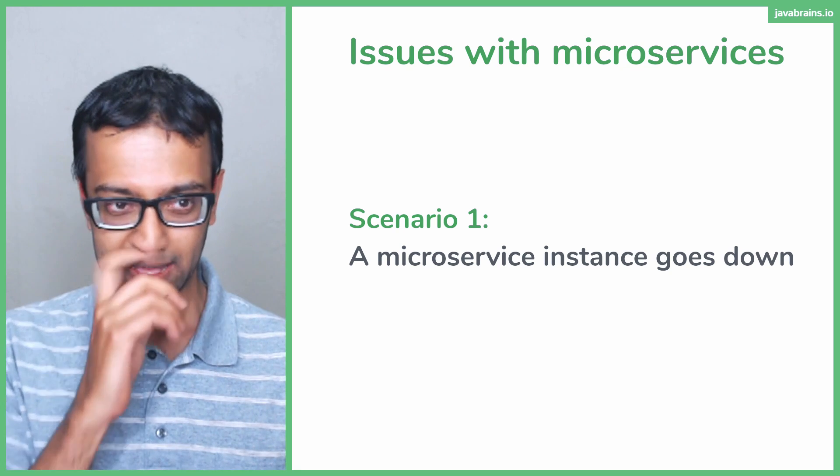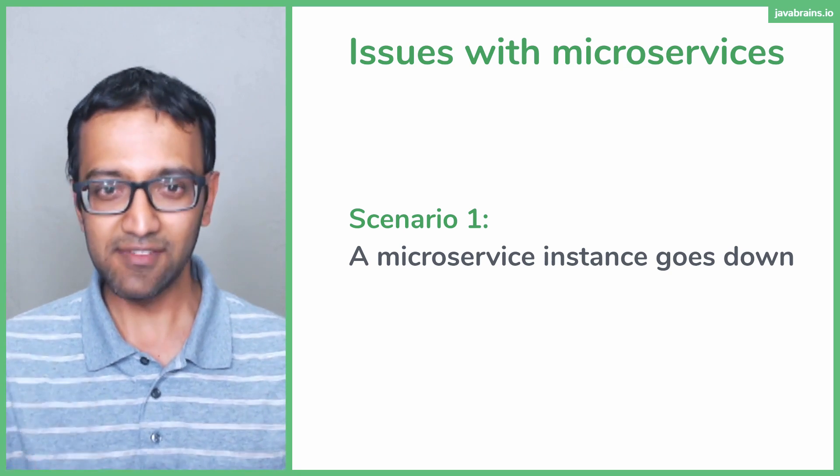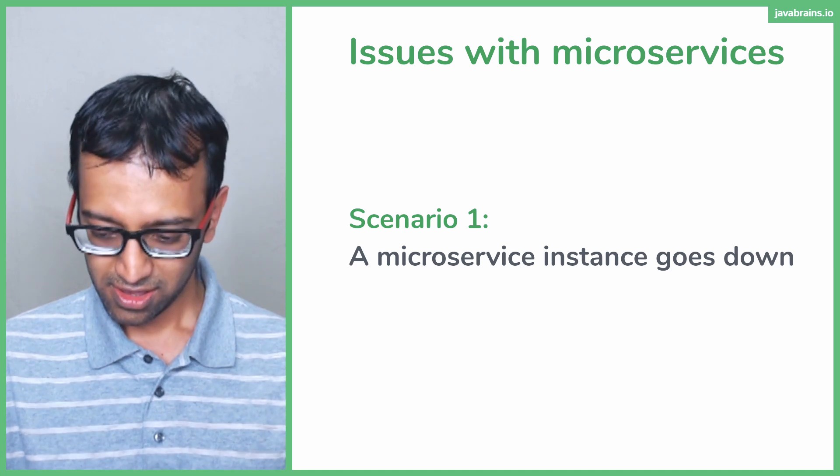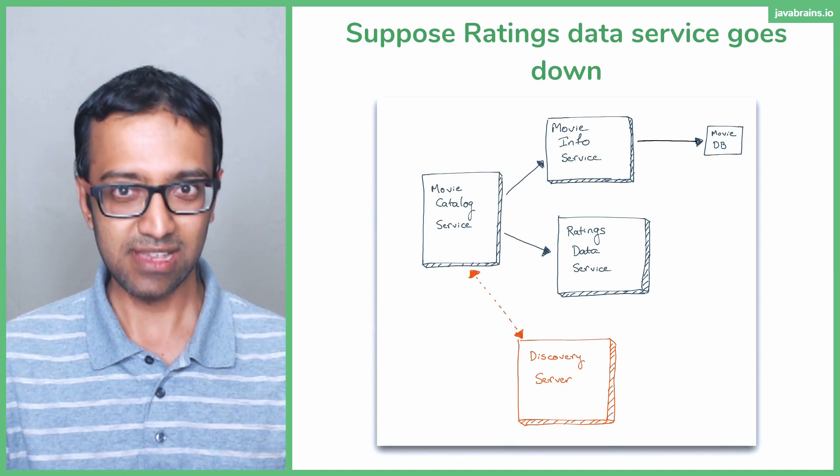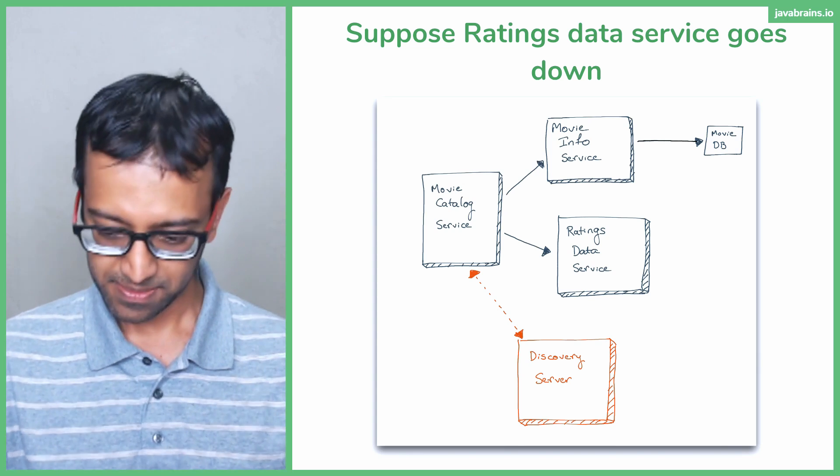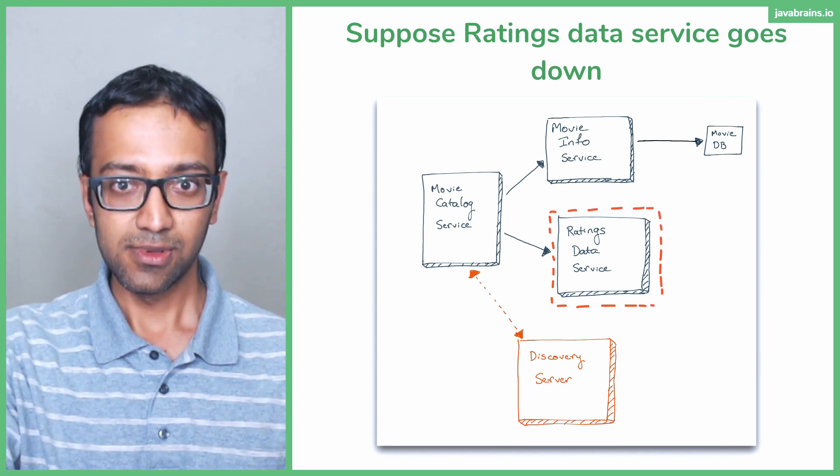You can handle the instance going down. You can prepare your architecture so that even if the instance were to go down, you work around it. So let's take this example. Let's say the rating service were to go down. What do you do? What can you do to handle this?